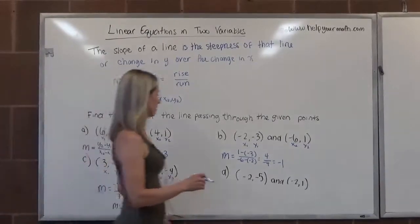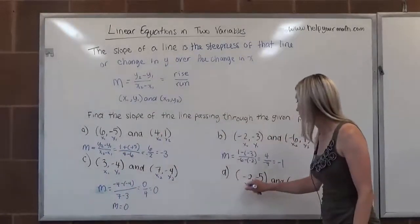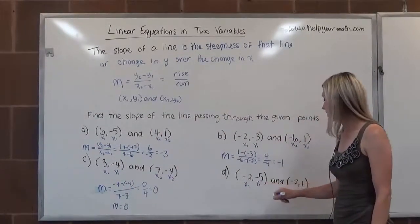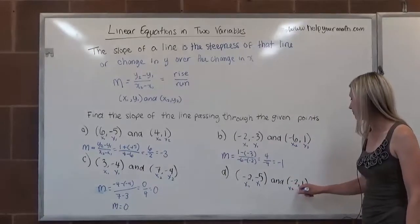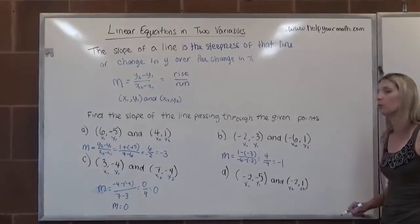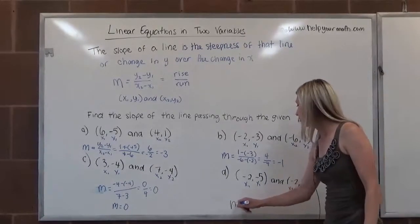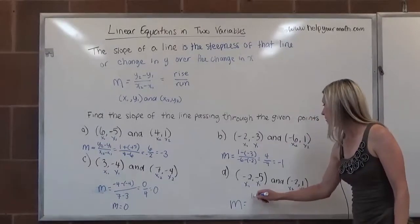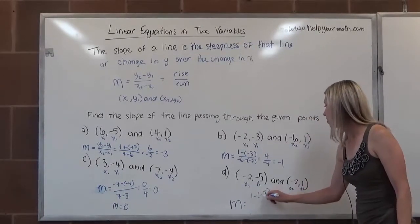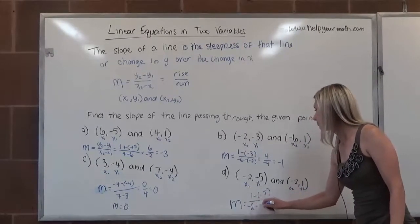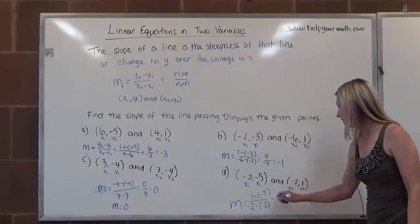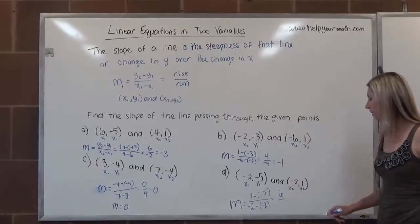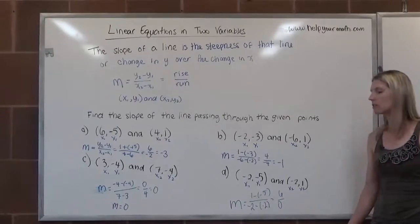And lastly, letter D, x1 is negative 2, y1 is negative 5, x2 is negative 2, y2 is 1. When we plug this into the slope formula, we get 1 minus negative 5 over negative 2 minus negative 2. That would be 6 over, uh-oh, uh-oh, 6 over 0.